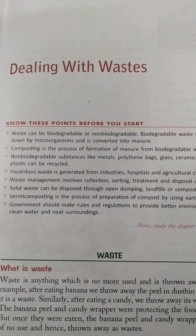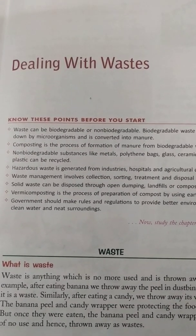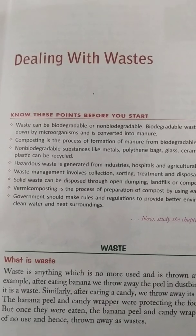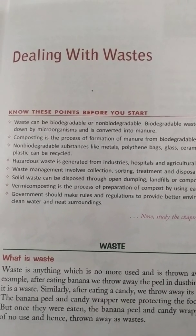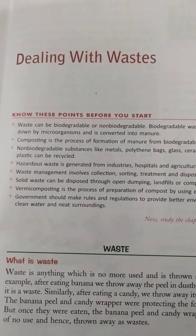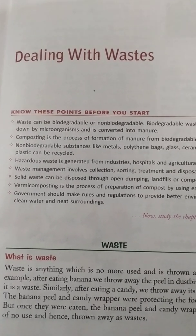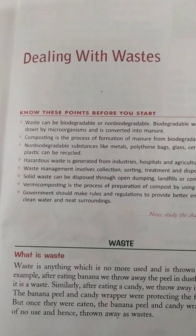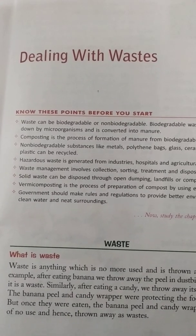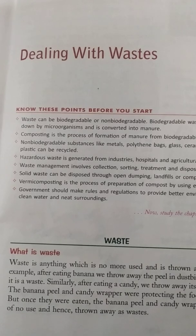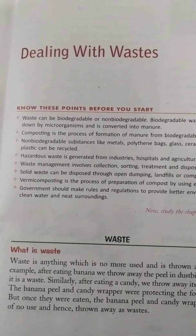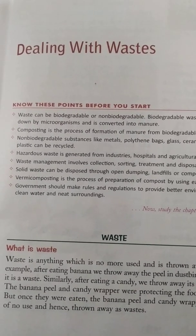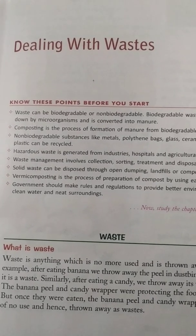Before going further with this chapter, we have to know about what is waste. Waste is anything which is no more in use and is thrown away. For example, after eating a banana, we throw away the peel in the dustbin because it is waste. Similarly, after eating a candy, we throw away its wrapper. The banana peel and the candy wrapper were protecting the food items, but once they were eaten, they were of no use and hence thrown away as waste.